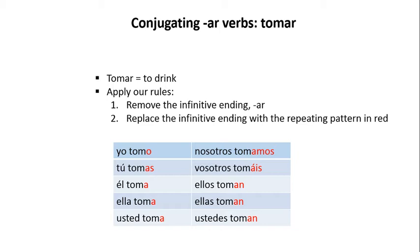Below is a matrix containing, on the left side, the first, second, and third person singular conjugation. On the right side is the first, second, and third person plural conjugation.